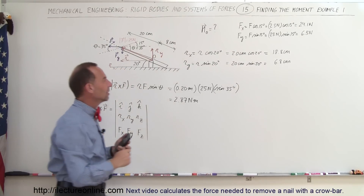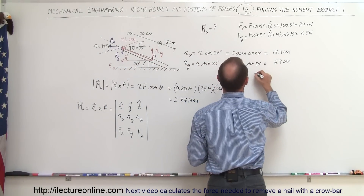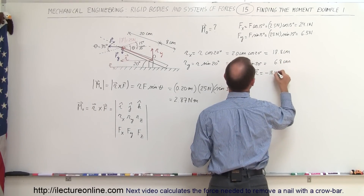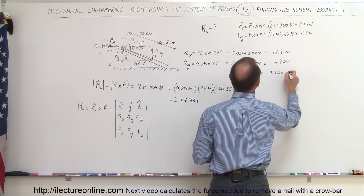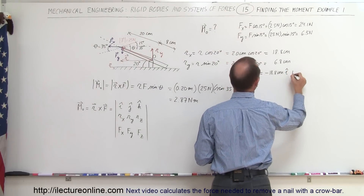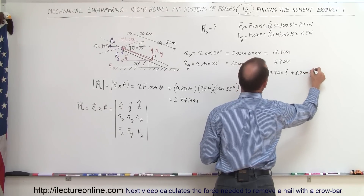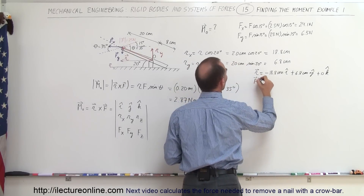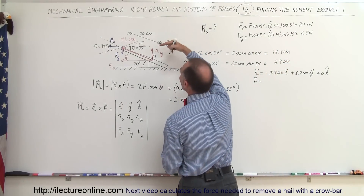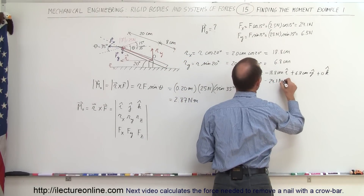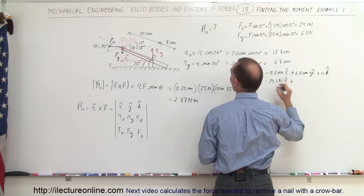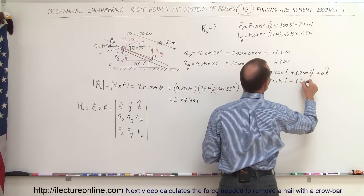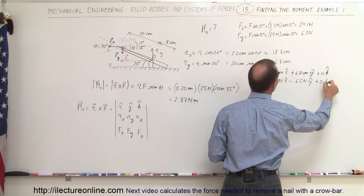We can write the vectors out to make it easier. R equals −18.8 cm in the X direction (I) plus +6.8 cm in the Y direction (J) plus 0 in the Z direction (K). For the force: F equals −24.1 newtons in the I direction minus 6.5 newtons in the J direction plus 0 in the K direction.